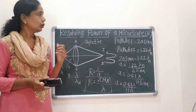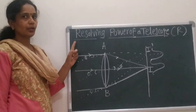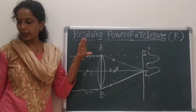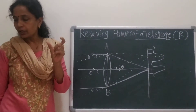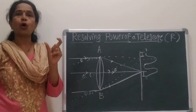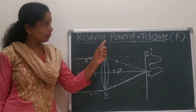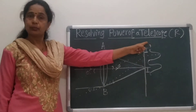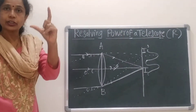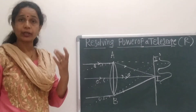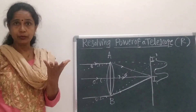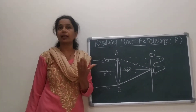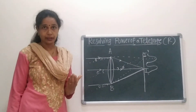Now, the resolving power of a telescope is defined as the reciprocal of the least angular separation between two objects that can be resolved by a telescope. The telescope is used to see distant objects, for example stars. Stars are self-luminous objects, and their diffraction pattern consists of Airy discs and Airy rings according to the Abbe theory.